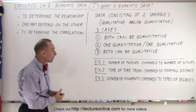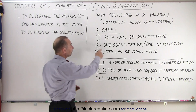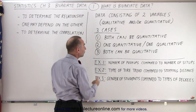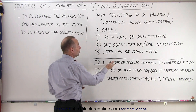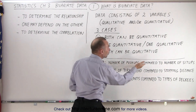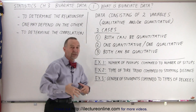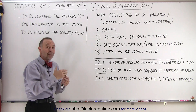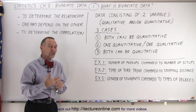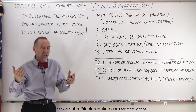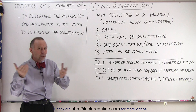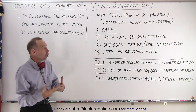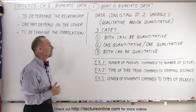For example, if both variables are quantitative, we might compare the number of push-ups to the number of sit-ups. We grab a number of people and we see how many sit-ups they can do and how many push-ups they can do, and we look at the relationship between them. So they're both quantitative.